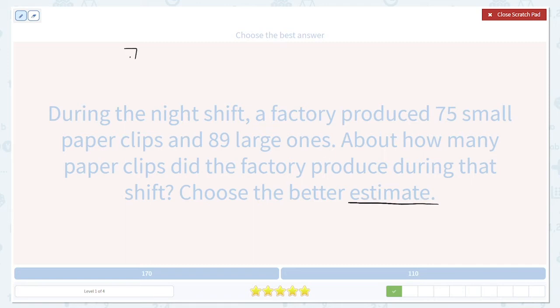So 75 small plus 89 large. Now let's round those numbers. 75. Remember, five always rounds up. It's in the middle between 70 and 80. But we decide to round it up every time. So 75 rounds up to 80.